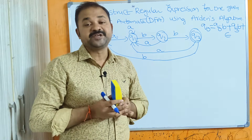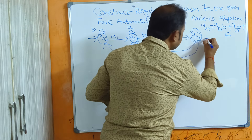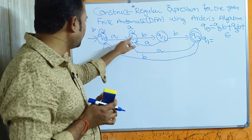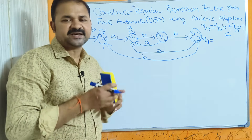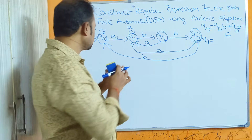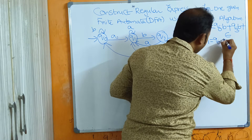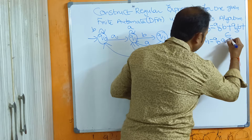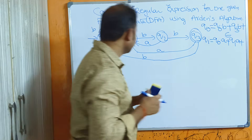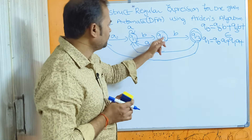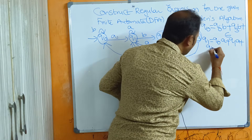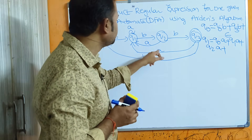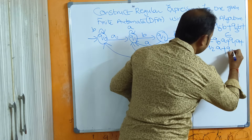Next, q1. The incoming edges for q1: from q0 with input a, so q0·a; another edge q1·a; another edge from q2 with input a, so q2·a; and another edge from q3 with input a, so q3·a. Therefore q1 = q0·a + q1·a + q2·a + q3·a.